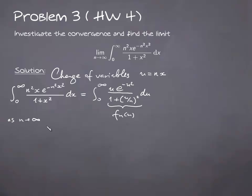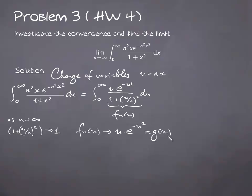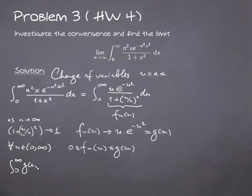As n goes to infinity, (1 + u/n) squared goes to 1. So the pointwise limit of the sequence is just the product of u and the exponential function e to the power minus u squared, which we denote g(u). Also, for every u from the interval 0 to infinity, the sequence fn(u) is dominated by the function g(u). This function g(u) is integrable, so we can again apply the dominated convergence theorem and pass the limit under the integral sign.